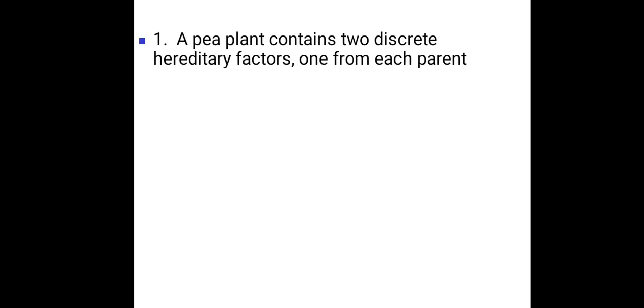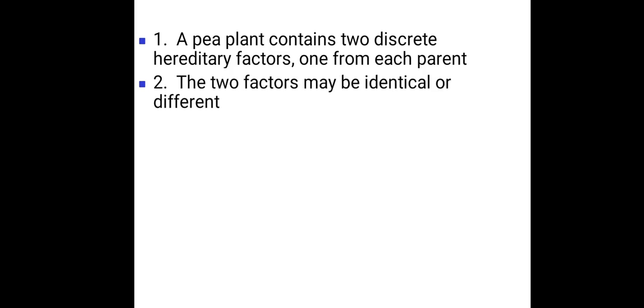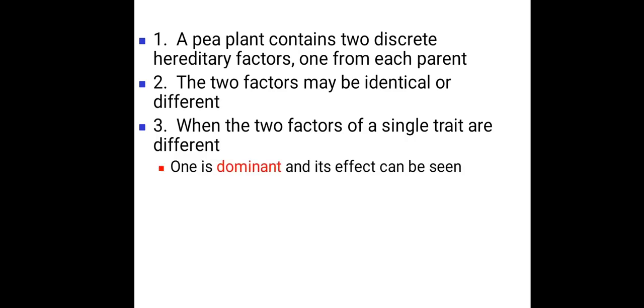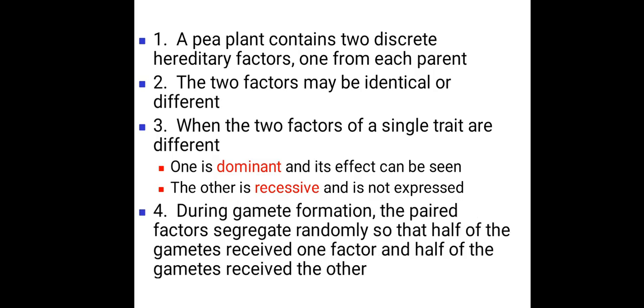A pea plant contains two discrete hereditary factors, one from each parent. These two factors may be identical or different. When the two factors of a single trait are different, one is dominant and its effect can be seen. The other is recessive and it is not expressed. During gamete formation, the paired factors segregate randomly so that half of the gametes receive one factor and half of the gametes receive the other. This was called Mendel's Law of Segregation.